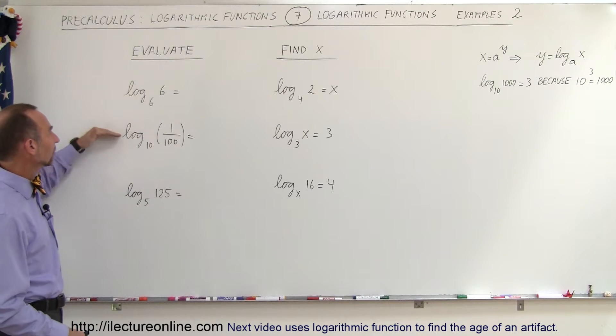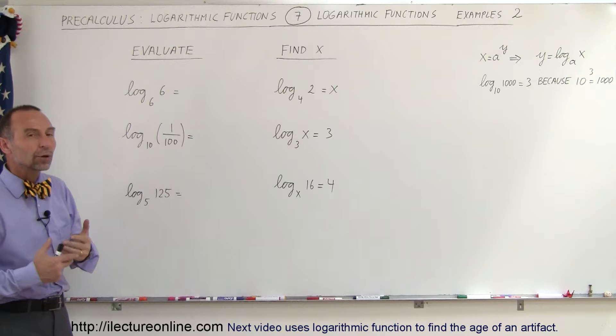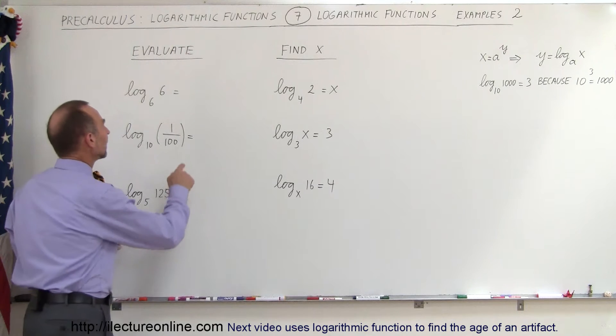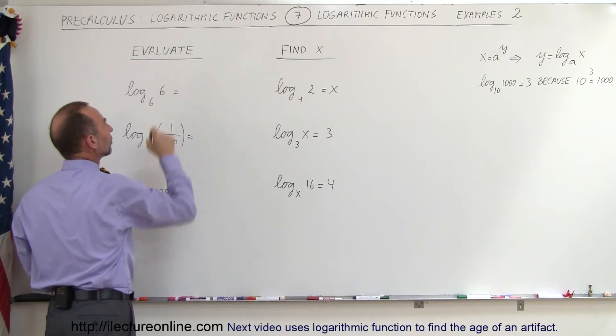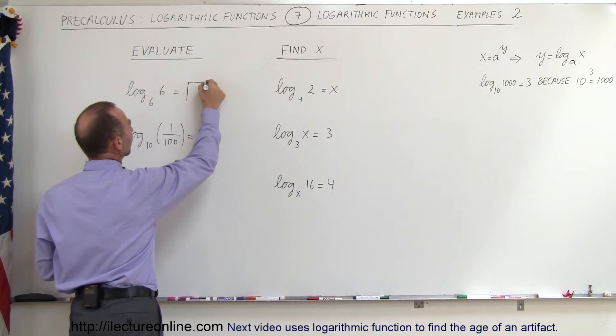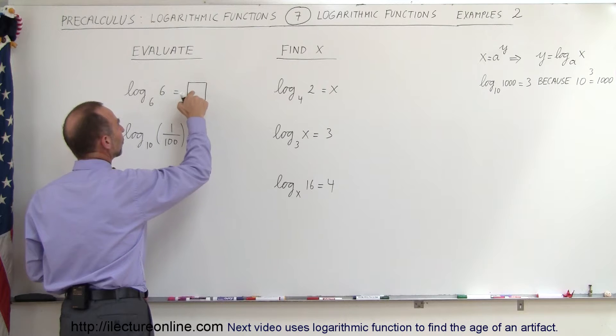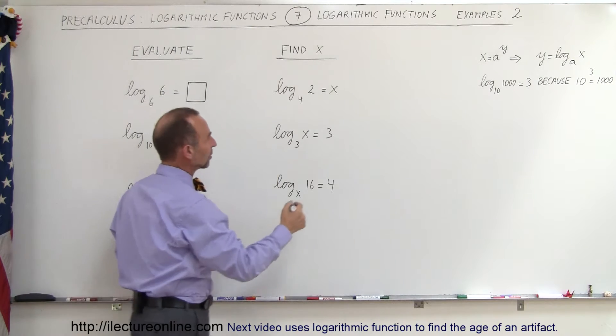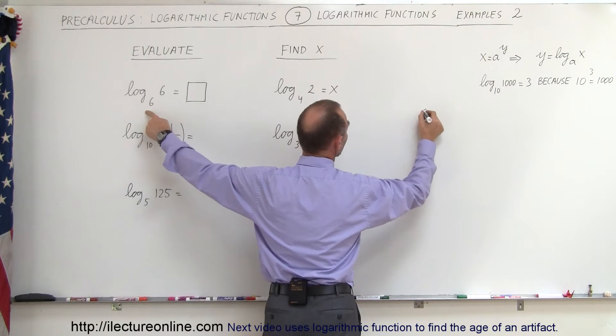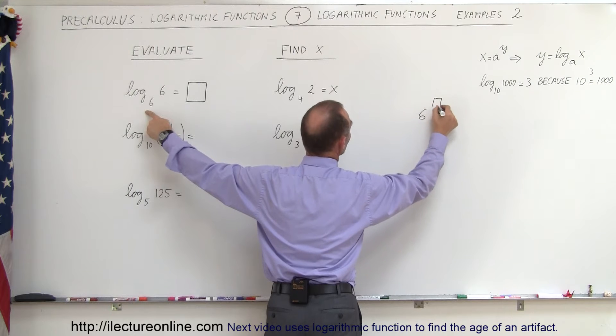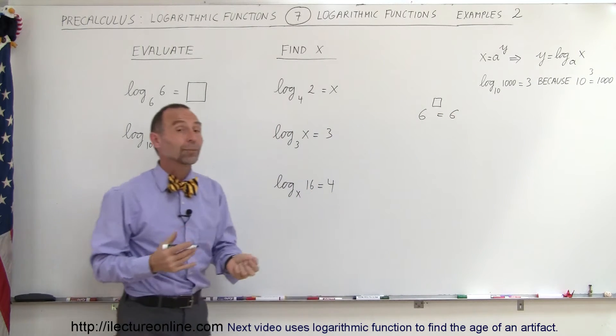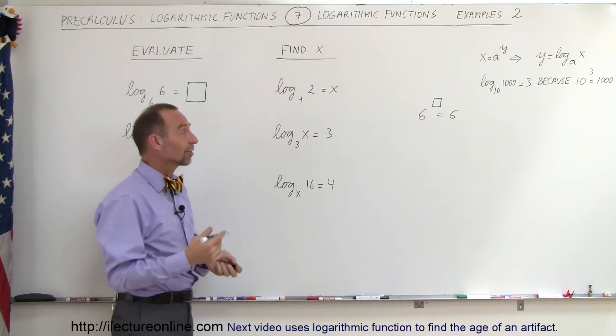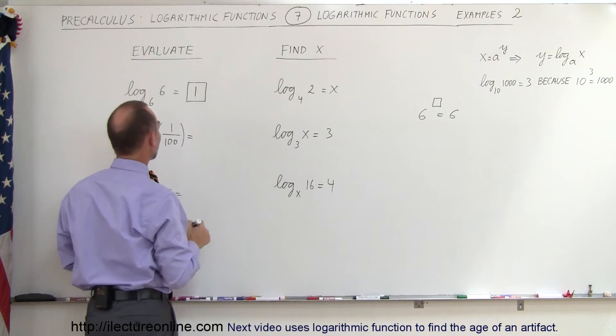So here we're trying to evaluate these expressions, and again the way you work with logarithms is saying that you take the base raised to this number right here equals 6. So if we put a little box there saying we're looking for an unknown number, and the way to find this number is to go over here, you say okay I take the base, I raise it to some unknown number and it gets 6. What should go in that unknown number? And that's pretty plain, you put the number 1. 6 to the first power equals 6, so this becomes 1.